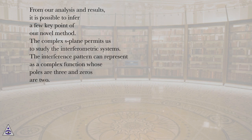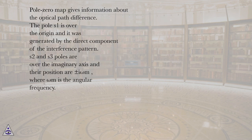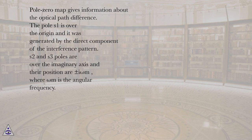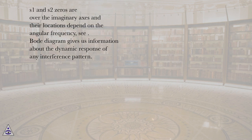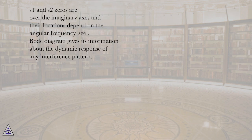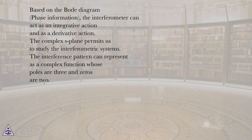From our analysis and results, it is possible to infer a few key points of our novel method. The complex s-plane permits us to study the interferometric systems. The interference pattern can be represented as a complex function whose poles are three and zeros are two. The pole-zero map gives information about the optical path difference. The pole s1 is over the origin and it was generated by the direct component of the interference pattern. Poles s2 and s3 are over the imaginary axis and their positions are ±jω_m, where ω_m is the angular frequency. Zeros s1 and s2 are over the imaginary axis and their locations depend on the angular frequency. The Bode diagram gives information about the dynamic response of any interference pattern. Based on the Bode diagram phase information, the interferometer can act as an integrative action and as a derivative action.